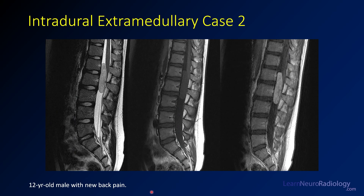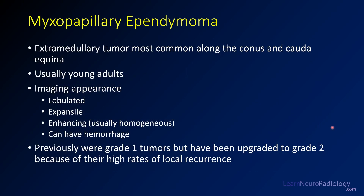Now moving on to case number two: a 12-year-old boy with new back pain. On T2 you see a well-demarcated lesion along the conus. On pre-contrast it's relatively isointense to the adjacent spinal cord. On post-contrast you see pretty avid enhancement with deflection of the spinal cord. This is an example of a myxopapillary ependymoma — common extramedullary tumors most often along the conus and cauda equina, usually in young adults and older children. The imaging tends to be lobulated and expansile with homogeneous enhancement; they can have areas of cystic degeneration and hemorrhage.